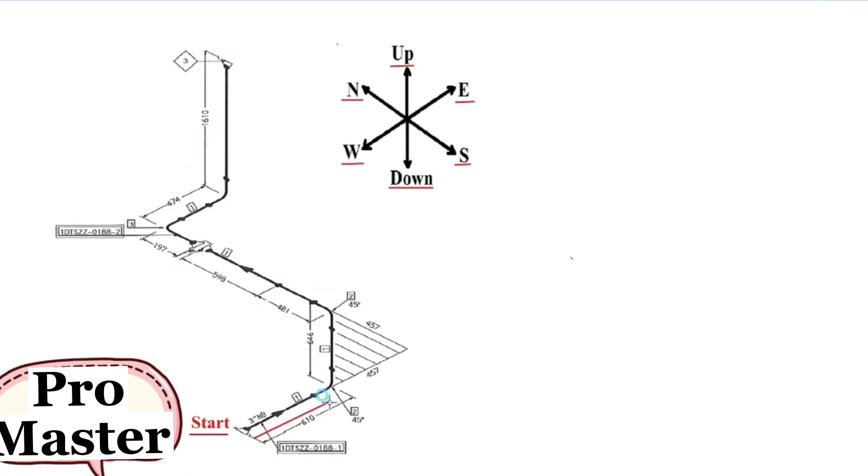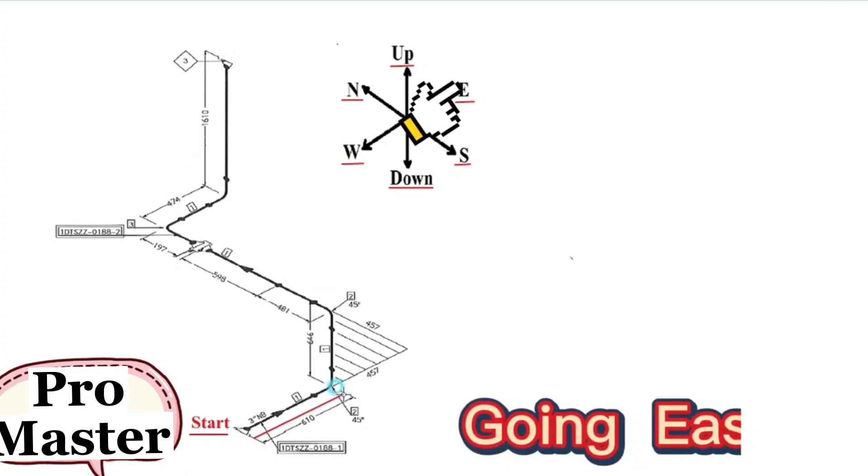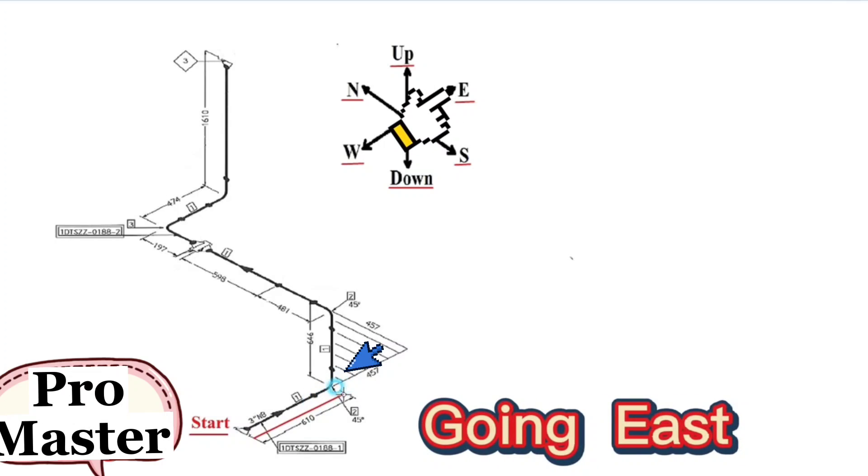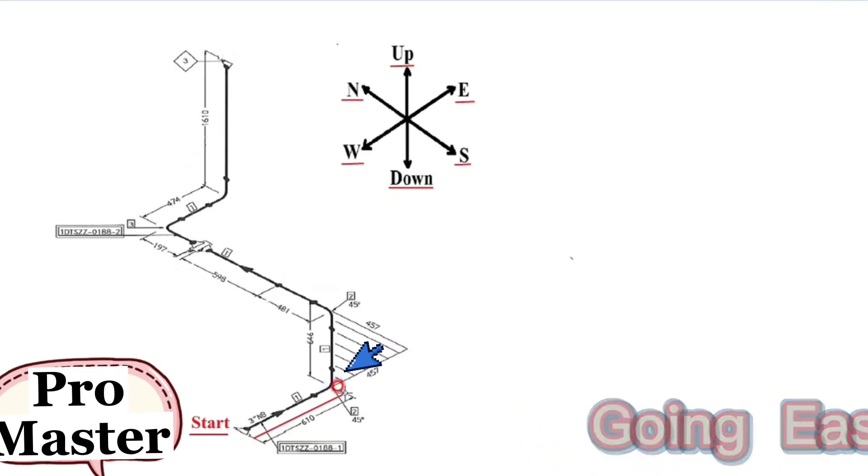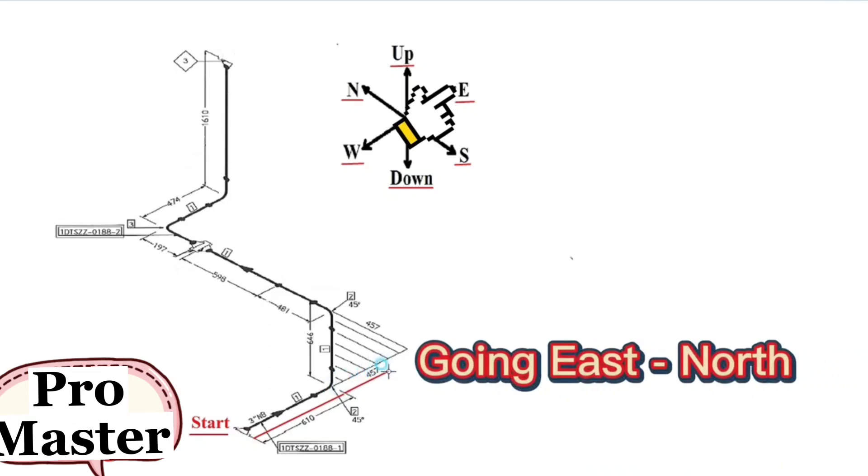The pipe travels start from this point to the east direction. There is an angle of 45 degrees. Therefore, the pipe travels to the east, then it travels north direction at an angle of 45 degrees.